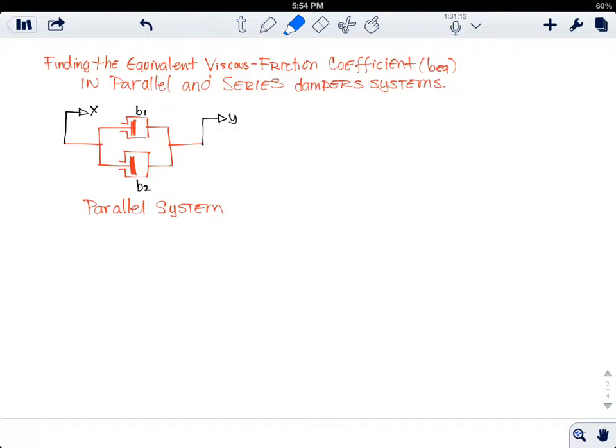Finding the equivalent viscous-friction coefficient of a parallel or series damper system. We're going to start with parallel systems and explain the equation of how we could find an equivalent when we have more than one dampers in series or in parallel. Notice that this system doesn't have a fixed object anywhere.